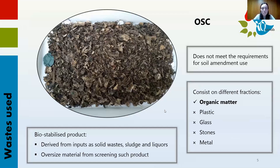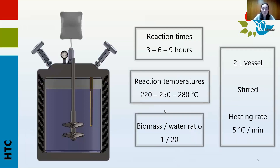Off-specification compost is defined as a bio-stabilized product derived from different input types including various solid wastes, sludges and liquors, and/or the oversized material resulting from screening. It consists of a mixture of different fractions such as glass, stones, plastics, metals, and the organic fraction — the one that is useful for our purpose. This kind of compost doesn't meet the requirements in Spain for being used as soil amendment, so it has no current use; it's just disposed of and stored. For this reason it was selected as one of the feedstocks, since we're trying to find a way to reduce or at least eliminate this amount of waste.